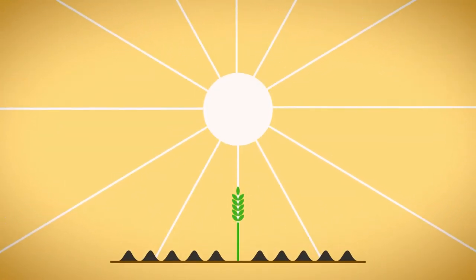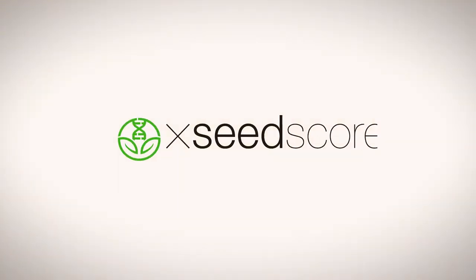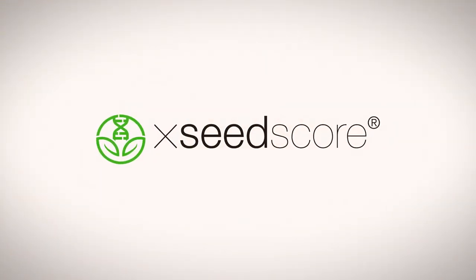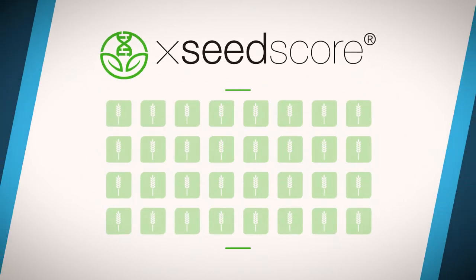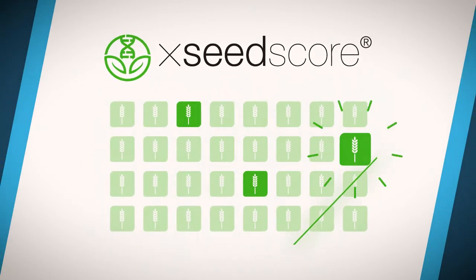To tackle this challenge, Computomics developed XseedScore, a machine learning-based technology that allows breeders to identify promising crosses better and faster.